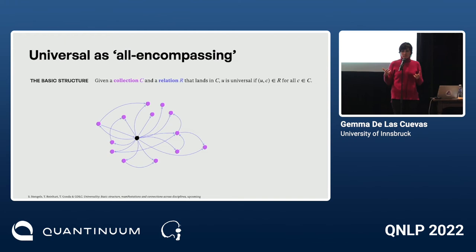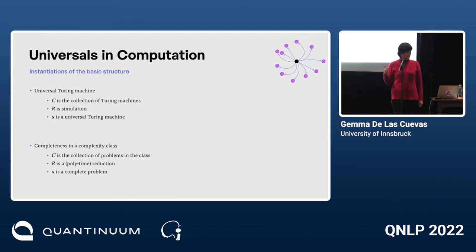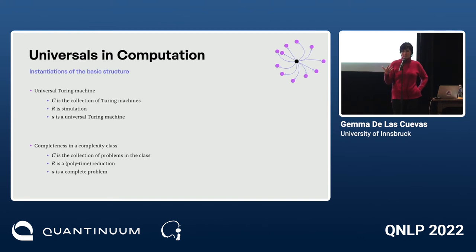In computation: C is the collection of Turing machines, R is simulation, and U is the universal Turing machine. Also, completeness in a complexity class: C is the collection of problems in that class, R is a reduction — computable for RE-completeness, polynomial-time for NP-completeness — and U is a complete problem. Both fit our structure.